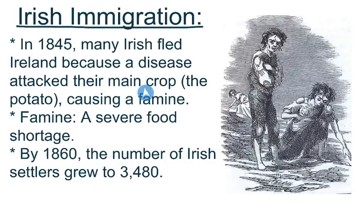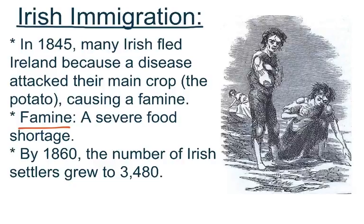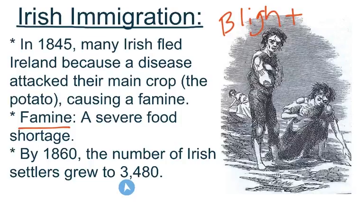In 1845, many Irish fled Ireland because a disease attacked their main crop — the potato — causing a famine. A famine is a severe food shortage, when a disease, bugs, or fungus destroys your crop so it cannot grow successfully. This famine, also known as the potato blight, caused many deaths and starvation, driving mass immigration to the United States and especially Texas. By 1860, the number of Irish settlers in Texas grew to 3,480.